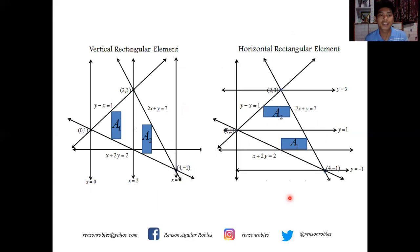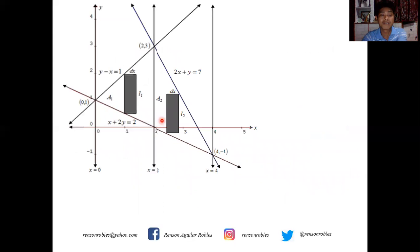I'll use vertical elements. A1 is bounded above by y minus x equals 1 and below by x plus 2y equals 2. A2 is bounded above by 2x plus y equals 7 and below by x plus 2y equals 2.